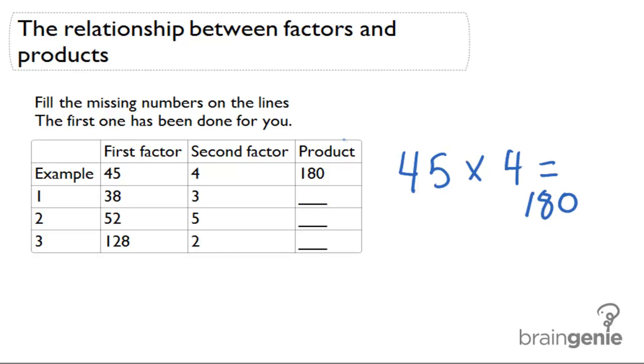So what happens is when you see first factor and second factor you should think multiplication because whenever you see the word product that means the answer is part of a multiplication problem.